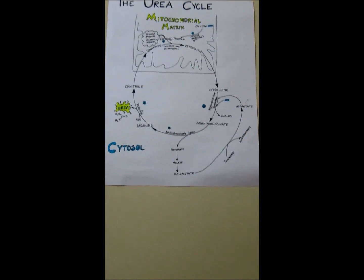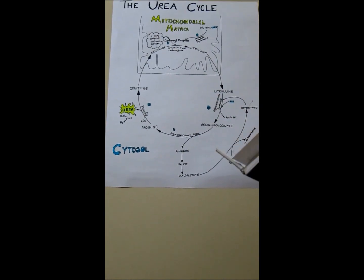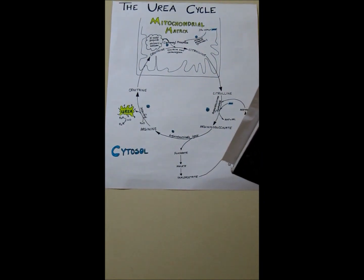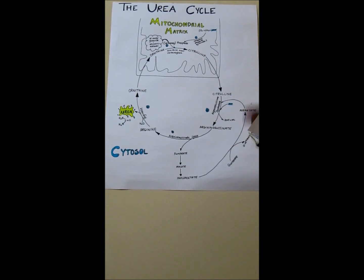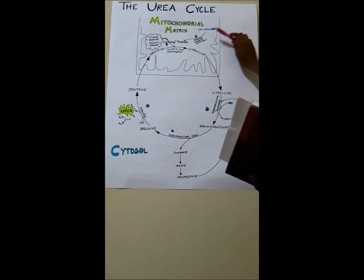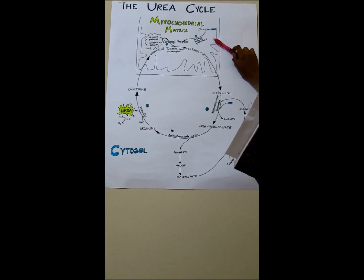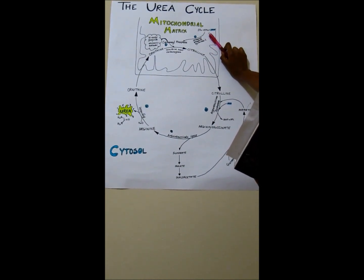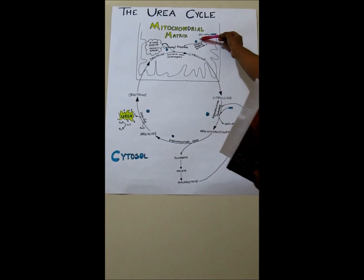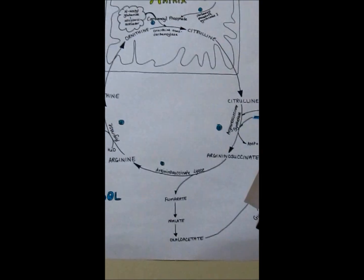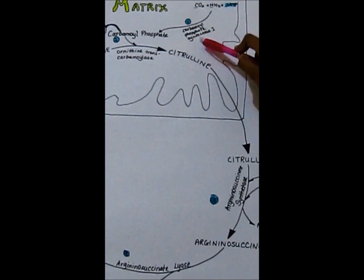Here is our urea cycle diagram. What you all need to pay attention to is the enzymes involved in this, the substrates and the different products, and where in the cell — whether the mitochondrial matrix or the cytosol — where these reactions are occurring. Carbamoyl phosphate synthetase 1 is the main regulatory enzyme for the urea cycle. When carbon dioxide and ammonia and ATP combine, this forms carbamoyl phosphate, catalyzed by this enzyme here.